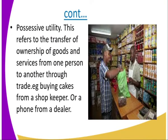Then there is possessive utility. This refers to the transfer of ownership of goods and services from one person to another through trade. For example, when you go to a shop and you want milk, the shopkeeper will give it to you in exchange for money. The milk now becomes yours, and the shopkeeper gets the money. You have now gained possession of the milk, which initially belonged to the shopkeeper. That is possessive utility.